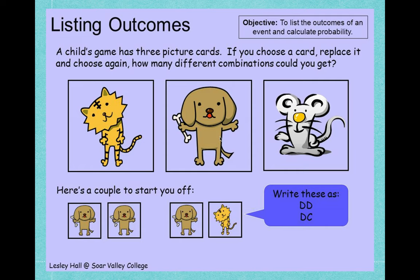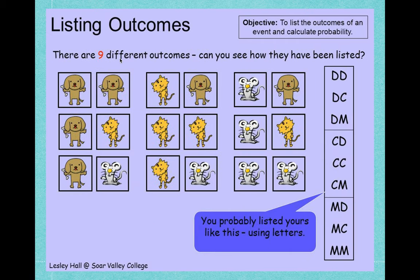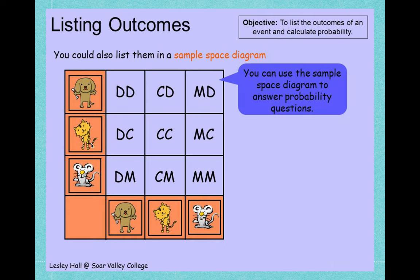What do you think the other outcomes could be? Remember, every time we pick a card we put it back. There are actually nine different outcomes. We can have dog-dog, dog-cat, dog-mouse, cat-dog, cat-cat, cat-mouse, mouse-dog, mouse-cat, and mouse-mouse. We can shorten these and write them as dd, dc, dm, cd, cc, cm, md, mc, mm. This is our sample space — all the possible outcomes. You can also draw a table and put them like this.